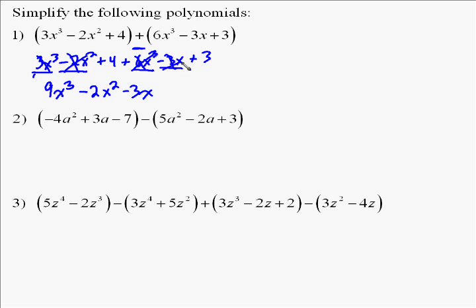The next term to look at is the x's. There's only one x, so we can just write negative 3x. And then finally, we look for the ones without a variable. Add those together. 4 plus 3 is 7.